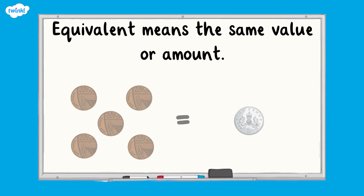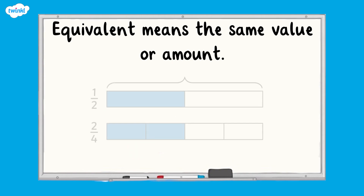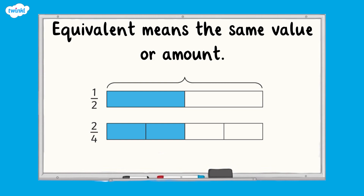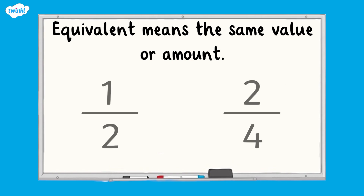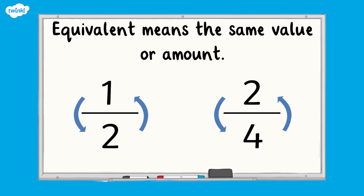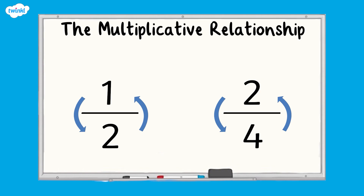This also applies to fractions. This bar model shows that one half is equivalent to two quarters — they represent the same amount. Another way to check if two fractions are equivalent is to look at the relationship between the numerator and the denominator in terms of multiplication and division. This is called the multiplicative relationship.